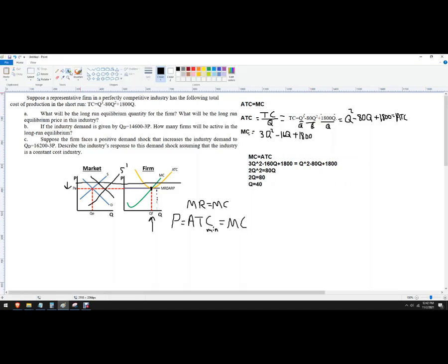Let me go up and fix my calculus here. Okay. This should be 160Q. There we go. And so now I know that this quantity right here is 40 in this market.